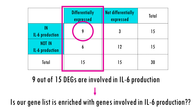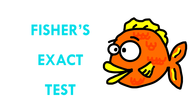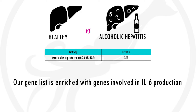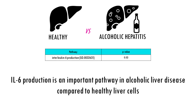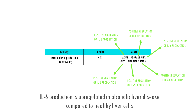But what if there were only 9 out of 15 differentially expressed genes? We need an objective statistical test to determine what is enriched and what's not. The method commonly used in pathway enrichment analysis is Fisher's exact test. You obtain a p-value for interleukin-6 production which tells you if that pathway is over-represented in your gene list. If your p-value is really low, you can say that IL-6 production is an important pathway in alcoholic liver disease. But be careful — it does not mean it's upregulated; you would have to check whether the genes are positive or negative regulators of that pathway.